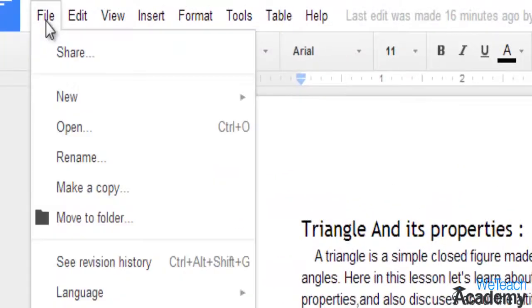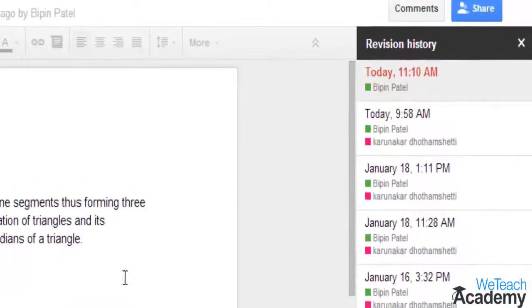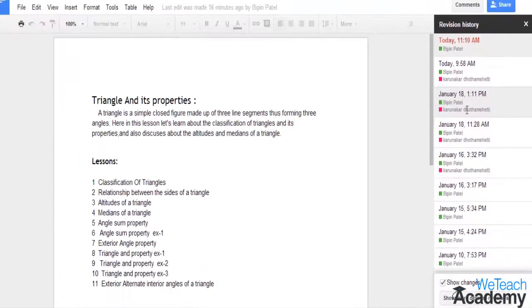go to the File menu located at the toolbar, then select 'See revision history'. The revision history panel will appear on the right side of the screen, and you can check the time and date-wise changes and